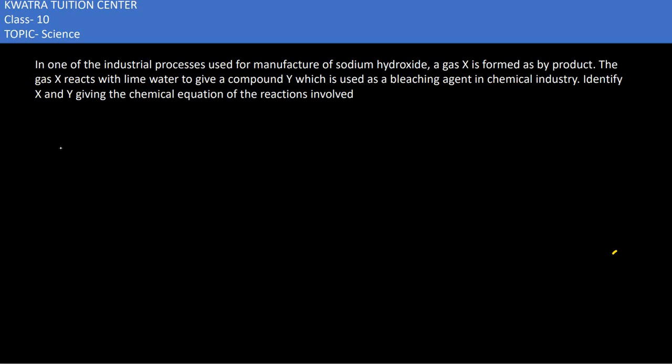In the 7th part it says in one of the industrial processes used for manufacture of sodium hydroxide, gas X is formed as a by-product. When sodium hydroxide is made, which gas is released?